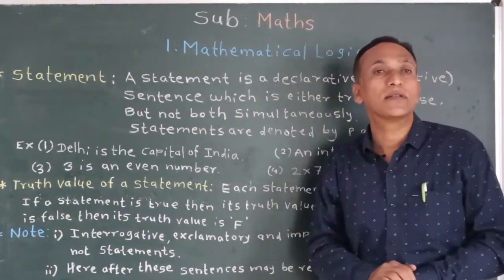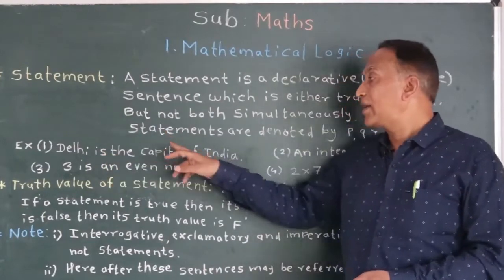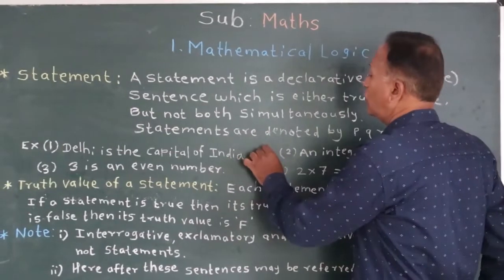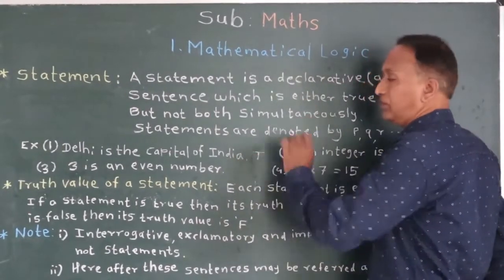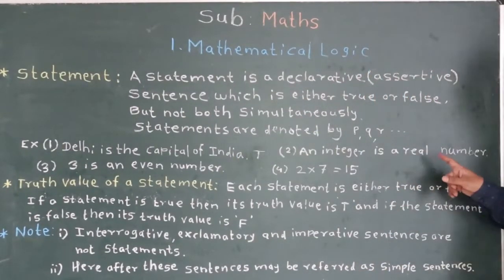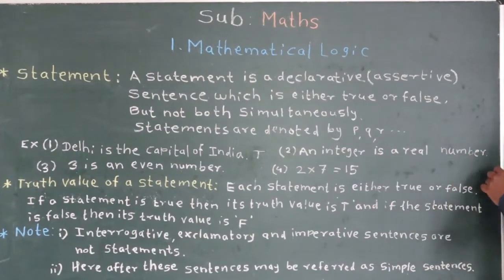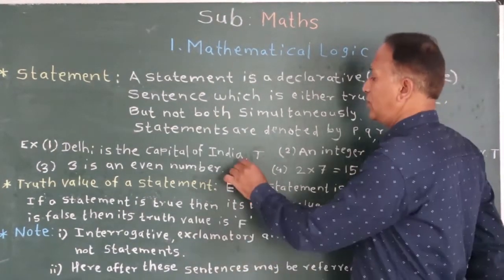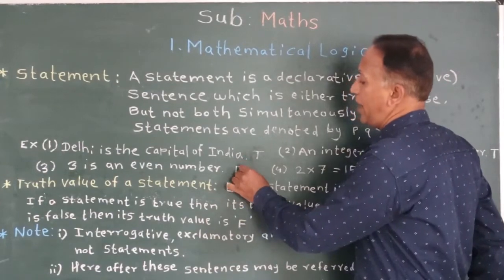We will take other examples. Delhi is the capital of India. This is a statement and it is a true statement. That is why its truth value is denoted by T. This is also a statement. An integer is a real number and it is a false statement. So its truth value is denoted by F.